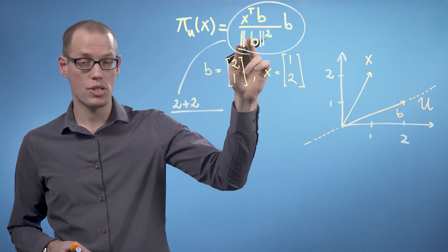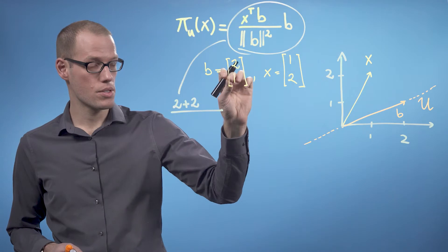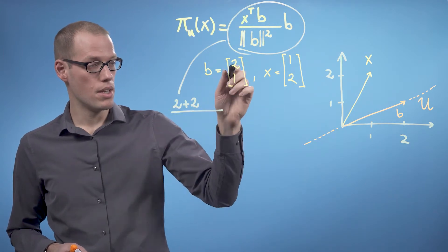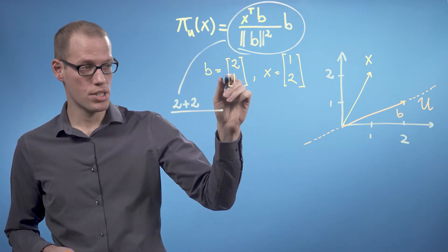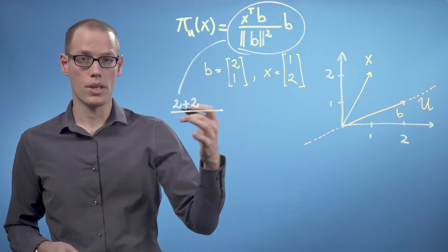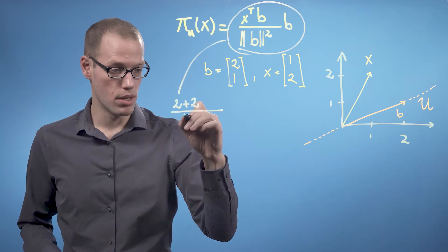And now we divide by the squared norm of b. So, the length of b is square root of 2 squared plus 1 squared. So overall, we get the squared norm to be 5.